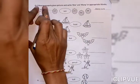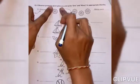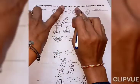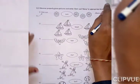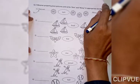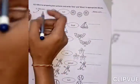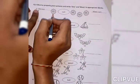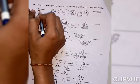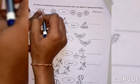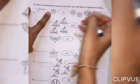Question number two. Observe properly given pictures and write one and many inappropriate blanks. How we write one and many? Look at here. Here one example. Only one sun is here. That's why we write here one. O-N-E. One sun.